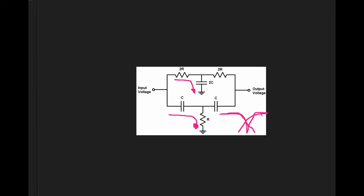This twin T filter gets used in all kinds of things. You can use it as a very highly selective notch filter to notch out a frequency that you don't want.